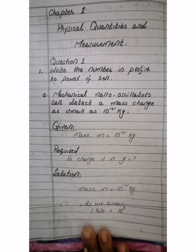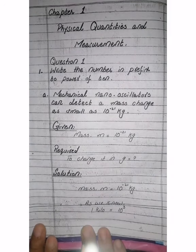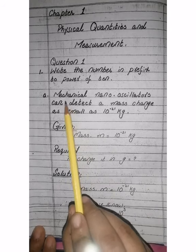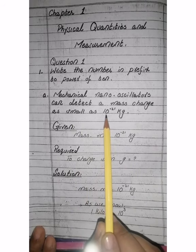You don't need to find this difficult. Prefixes are basically a form of powers of 10, and we assign a special name to each. So we are saying that you have to change the numbers into prefix form with powers of 10. Part A: mechanical nano-oscillators can detect a mass change as small as 10 raised to the power of minus 21 kg.